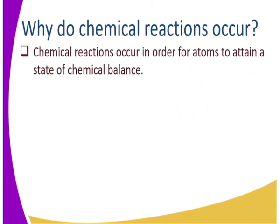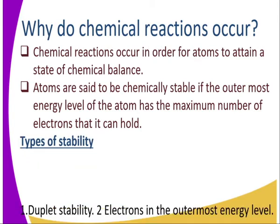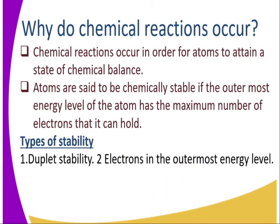So why do chemical reactions occur? Chemical reactions occur in order for atoms to attain a state of chemical balance. When is an atom said to be chemically stable? An atom is said to be chemically stable if the outermost energy level has the maximum number of electrons that it can hold. So what are the maximum numbers of electrons that an atom can hold in the outermost energy level?